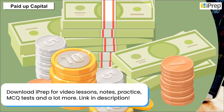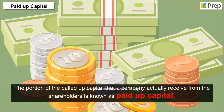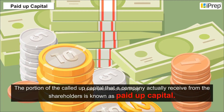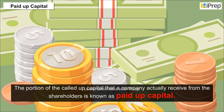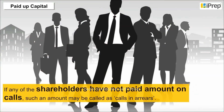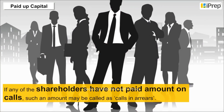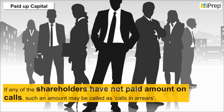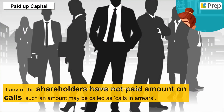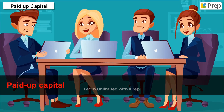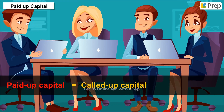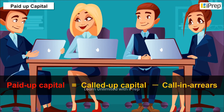Paid Up Capital: The portion of the called-up capital that a company actually receives from the shareholders is known as Paid Up Capital. If any of the shareholders have not paid the amount on calls, such an amount may be called as Calls in Arrears. Therefore, Paid Up Capital is equal to Called Up Capital minus Calls in Arrears.